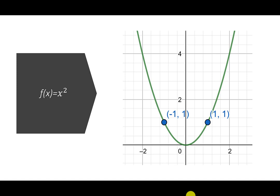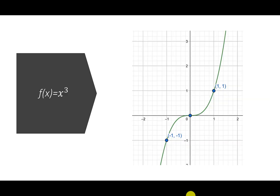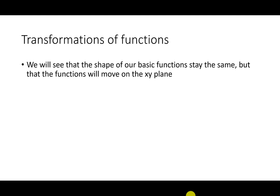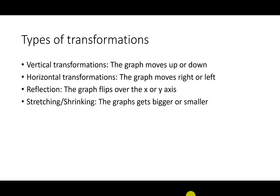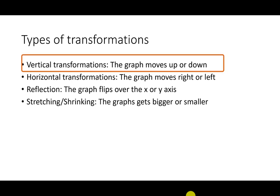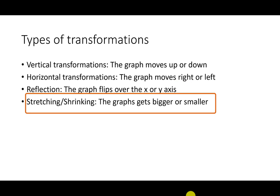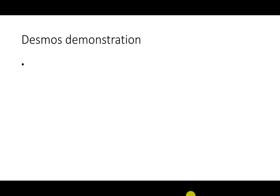Let me quickly run through the different functions we're going to do: f(x) = x², the square root of x, absolute value, x³, and the cube root of x. The shape of our function stays basically the same, but the function moves around on the x-y plane. There are four types of transformations: vertical (up or down), horizontal (right or left), reflection (flip over x-axis or y-axis), and stretching or shrinking. The best way to show this is to go over to Desmos and demonstrate it before we look at the math.